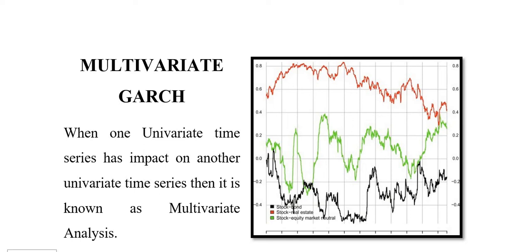Hello friends, today we are going to talk about the multivariate GARCH. But before starting, let's understand what the term 'multivariate' means in time series. Time is very important, and you might have observed that there is an increase and decrease in the stock market, or sometimes when you go to the market you observe there is a sale in stores — maybe in physical stores or on e-commerce platforms like Myntra or Amazon — and there is a change in sales during the festival season.